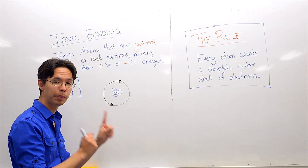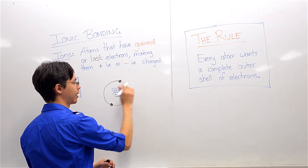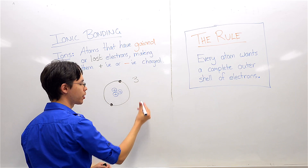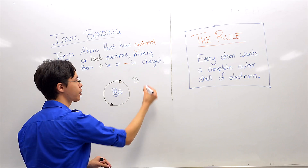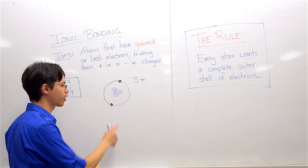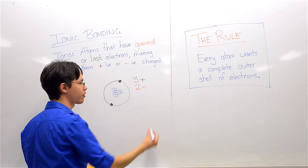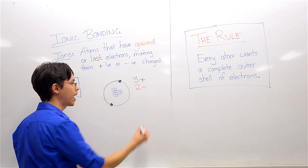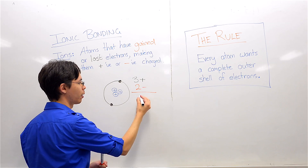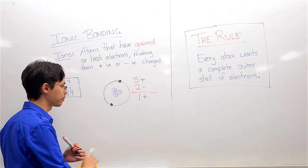Let's look at the balance of charges now. How many protons do I have? Let's count them: one, two, three. Three protons, each positively charged. Let's look at how many electrons I have: one, two. So I've got two negative charges. If I do some simple maths, I get a result of one positive charge overall for this atom.